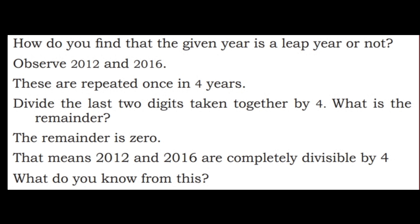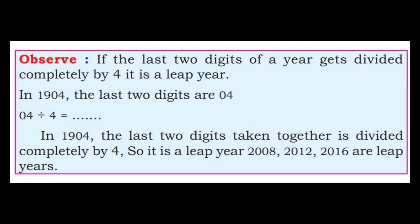Observe: 2012 and 2016 are repeated once in 4 years. Divide the last 2 digits taken together by 4 — what is the remainder? The remainder is 0. 12 divided by 4 and 16 divided by 4 both give remainder 0. That means 2012 and 2016 are completely divisible by 4. If the last 2 digits of a year are completely divisible by 4, it is a leap year. For example, 1904 — last 2 digits are 04; 04 divided by 4 equals 1, so it is a leap year.